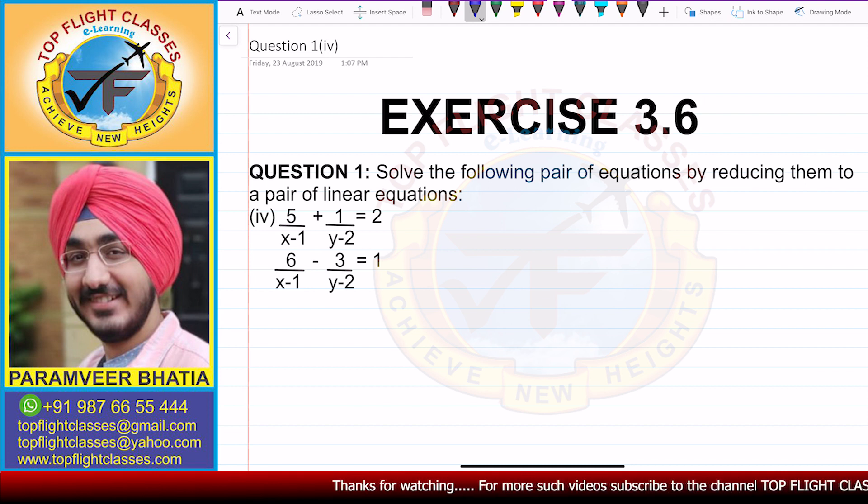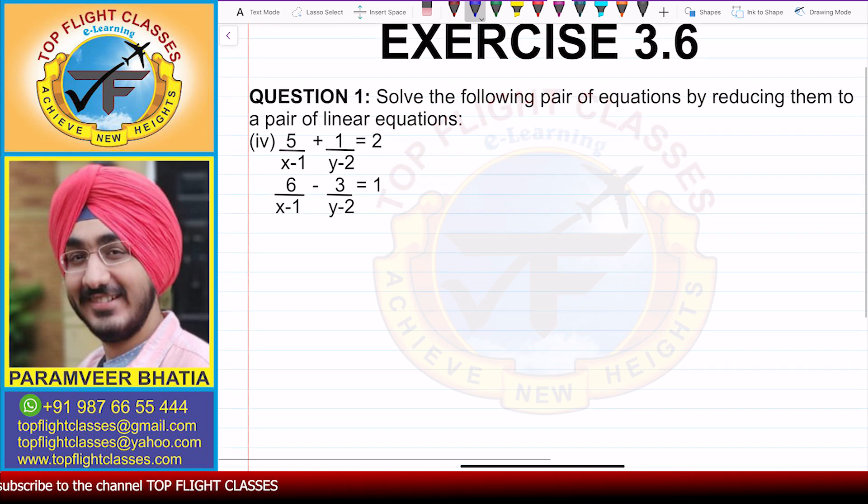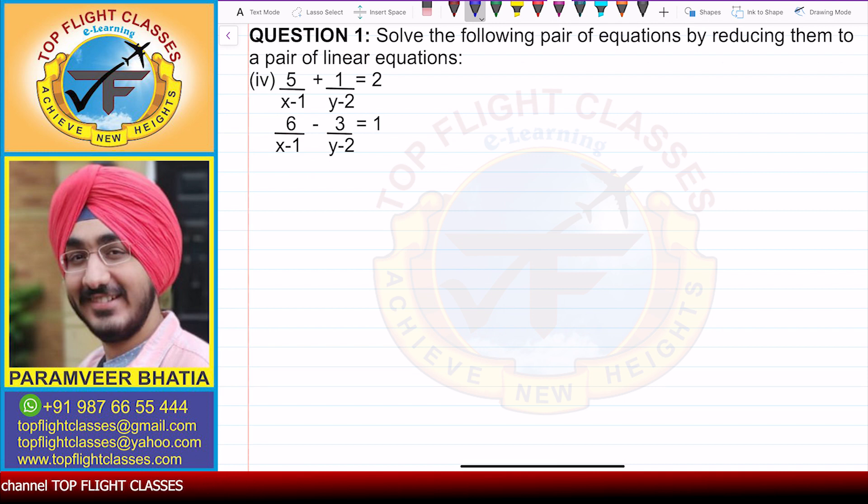The equations that we have are 5/(x-1) + 1/(y-2) = 2 and 6/(x-1) - 3/(y-2) = 1. In this case, it is very clear that we have one (x-1) factor and (y-2) factor.